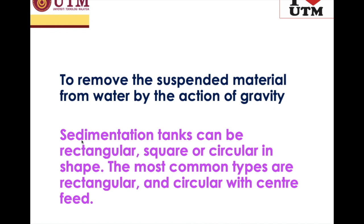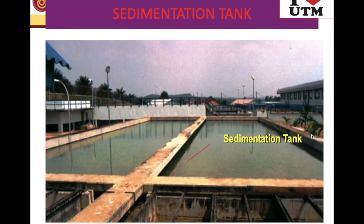The shape of the sedimentation tank can be rectangular, can be square, or can also be circular. This is basically how a sedimentation tank looks like — it's like a big, very huge field. You can see a very huge area of the sedimentation tank. You don't see anything moving inside because we want to allow the particles to settle. This is one kind of sedimentation tank at a water treatment plant.